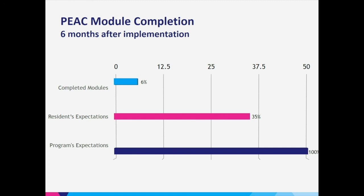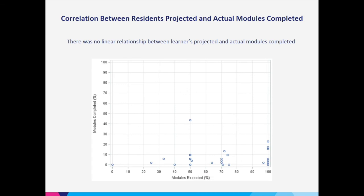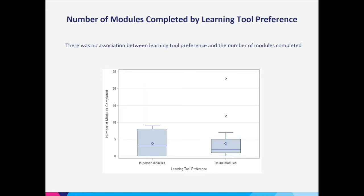Six months after the PEAK curriculum was implemented, we collected module completion data. The program expected 50% of modules completed in half a year. Residents expected to finish about 35% over six months. In reality, they completed only 6% of the modules. We also found no linear relationship between projected and actual modules completed, and no association between learning tool preference and number of modules completed — preferring online modules did not mean a resident completed more of them.